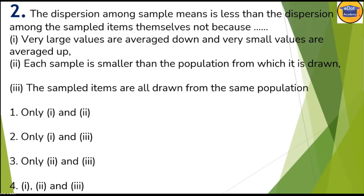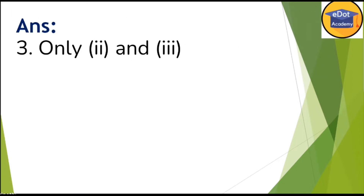Option two says each sample is smaller than the population from which it is drawn — so option two is correct. Option three says the sample items are all drawn from the same population. In a particular sampling, all sample items are drawn from the same population — so option two and option three are both correct.